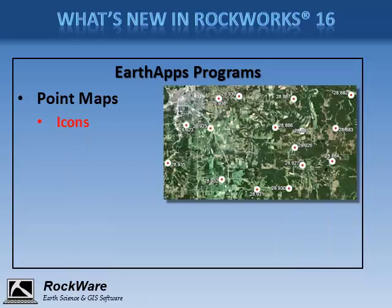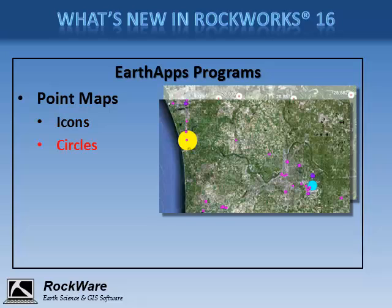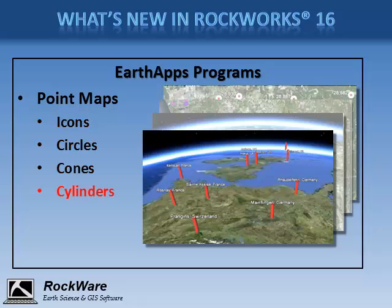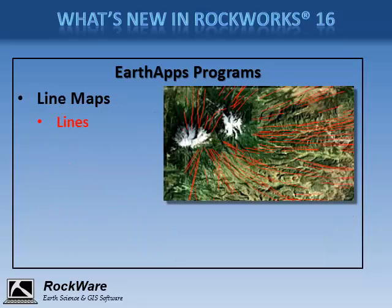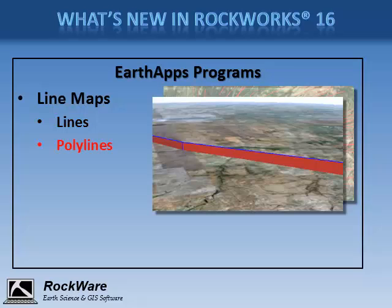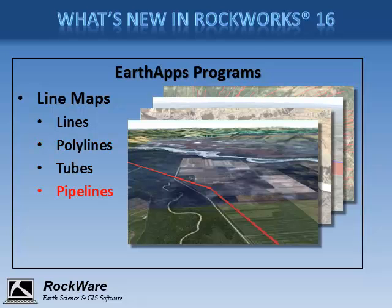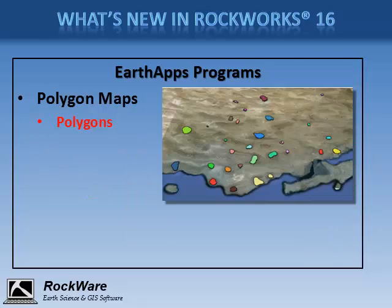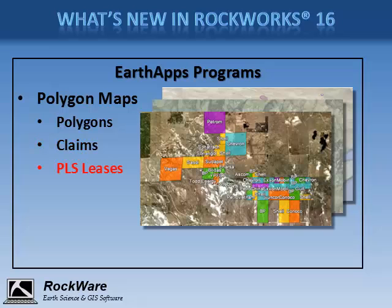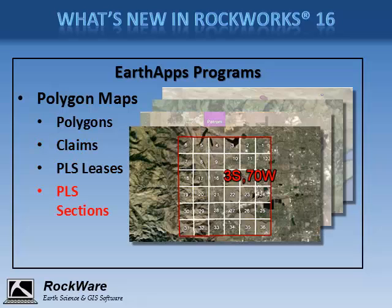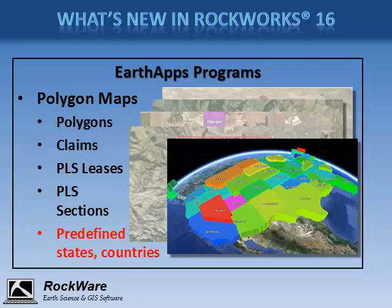The Earth Apps point maps display geographic locations with icons, circles, cones, cylinders, and strike and dip symbols. The Earth Apps line map programs display in Google Earth 2D and 3D lines, polylines, tubes, and pipelines. The Earth Apps polygon map programs display in Google Earth polygonal shapes, four-corner claim blocks, public land survey leases, public land survey sections, and predefined country and U.S. state boundaries.